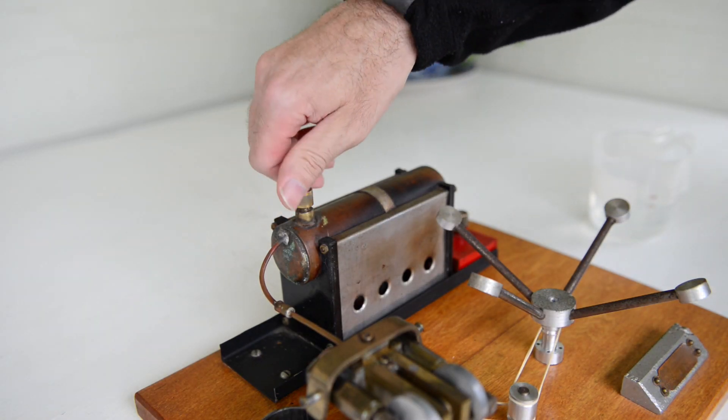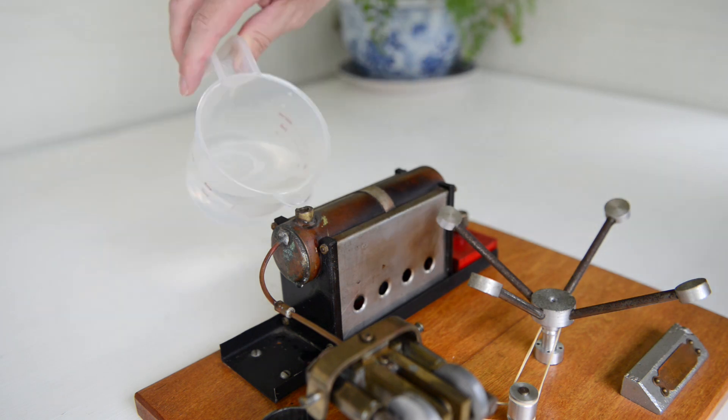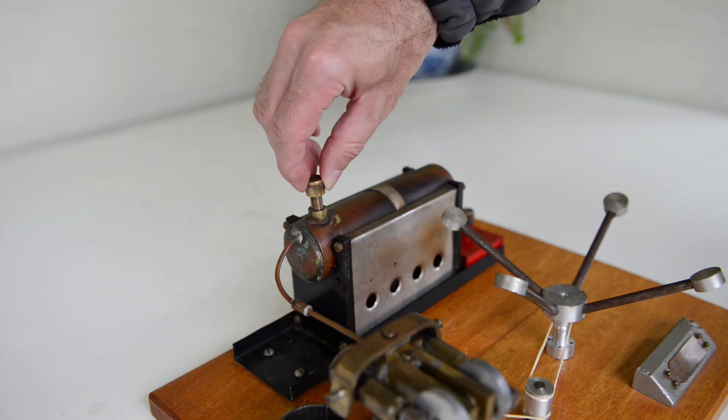The first thing I do is remove the safety valve cap and begin filling the boiler up with water. Once it's filled to about halfway, I screw the safety valve cap back on.